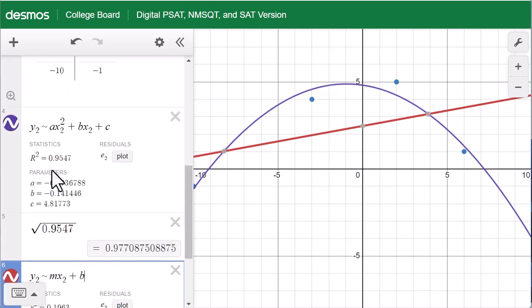For quadratic regression line, this correlation coefficient is 0.977, which means quadratic regression line is the best fit.